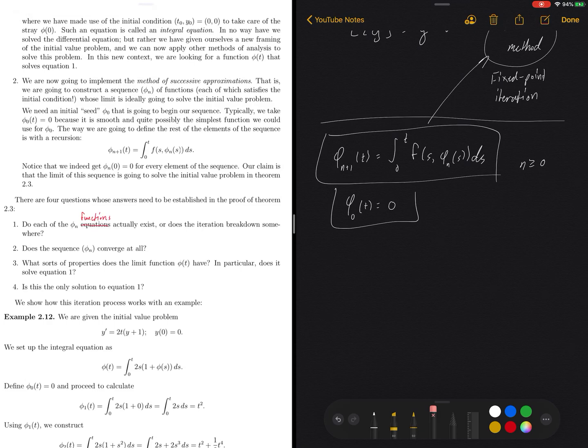Do each of these φₙ functions—not equations, that's functions—actually exist? In other words, can I integrate these functions? Are the functions continuous? Is there any way that these guys break down along the iteration?